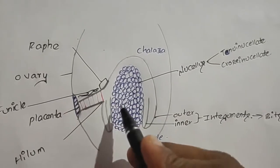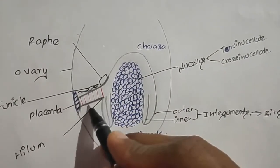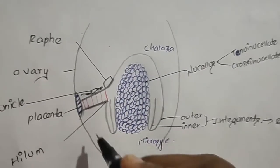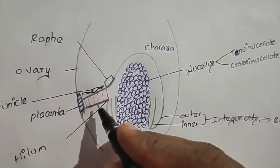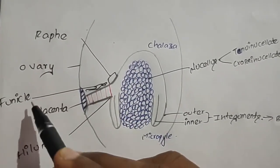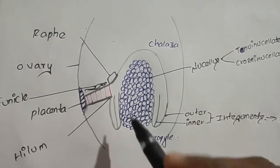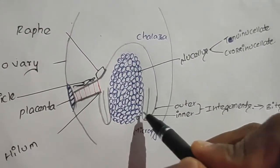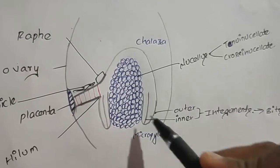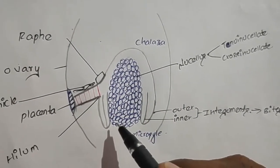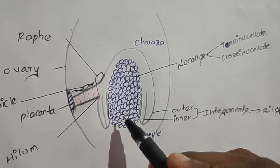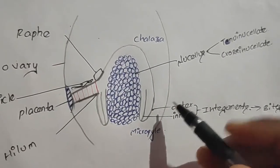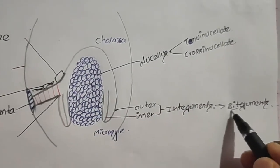The ovule has two parts: a stalk-like part and a body part. The stalk-like part is known as the funicle. The body part has a layer to protect it, and this protective layer is known as the integuments. In angiosperms, two integuments are present, and the presence of two integuments is known as bi-tegmic.